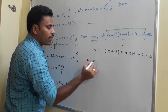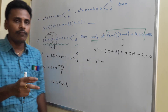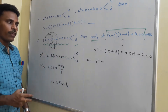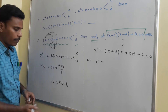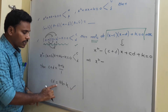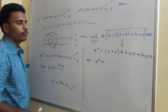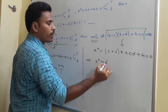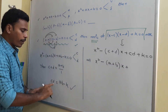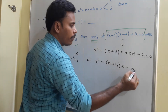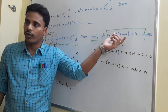Since we need the roots in terms of a and b, replace c+d with a+b, and cd with ab minus k. Then cd plus k equals ab. So the equation becomes x² minus (a+b)x plus ab equals 0.